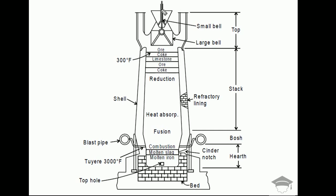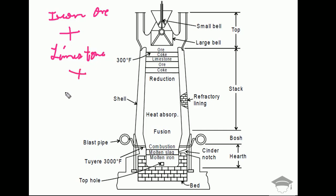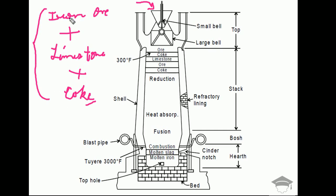On the top we feed three things: iron ore, limestone, and coke. These are the three raw materials to produce pig iron. For example, to produce one ton of pig iron, we take around 1.5 tons of iron ore, around 0.4 tons of limestone, and around 0.1 ton of coke.